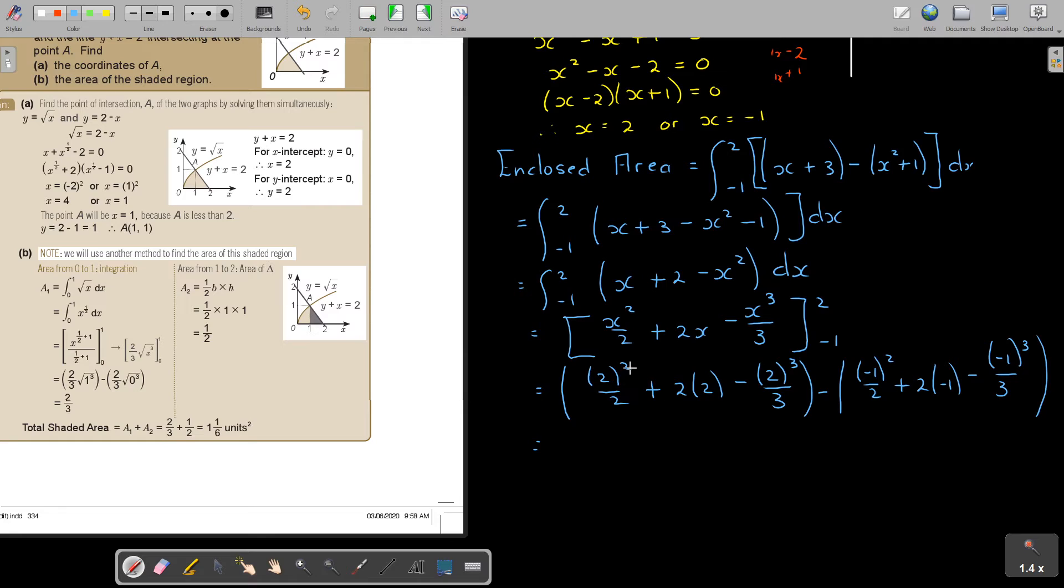And if I simplify this, so this is going to be 2 plus 4 minus, this is 2 to the power of 3, it's 8 over 3, and this is going to be positive, so half minus 2. This is going to become negative, multiply, so positive 1 over 3. And then I'm just going to simplify that, that's going to be 6 minus 8 over 3, that's 3 and 1 third.